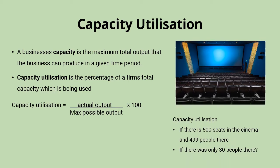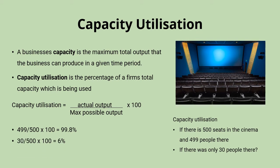A quick example: if you've got that cinema with 500 seats and there are 499 people there — your actual output is 499, you've sold 499 tickets — your maximum possible output is 500 seats. 499 divided by 500 multiplied by 100 gives 99.8%, which would be very high capacity utilisation. If you only had 30 people in that cinema, you'd do 30 divided by 500 multiplied by 100, which would be 6% — very low capacity utilisation.